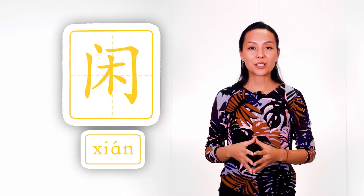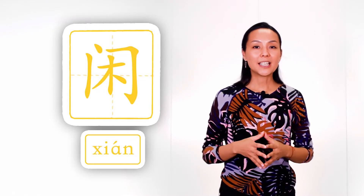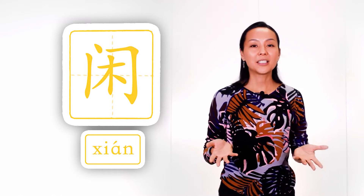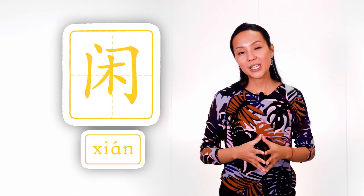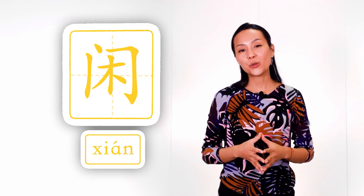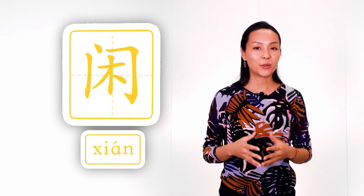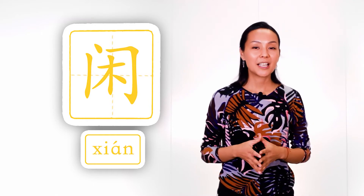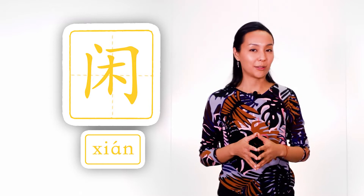The next example is 闲 (xián), meaning 'free time.' We see a tree inside the gates — when you have free time, you open your doors and go to the trees, to the woods. In the past we didn't have TVs and other things that wasted our time.